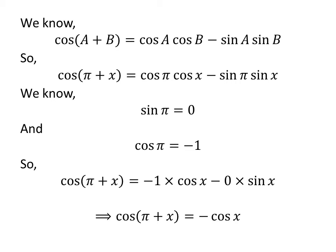So, cosine of pi plus x is equal to minus cosine of x minus 0, which is equal to minus cosine of x. So the value of cosine of pi plus x is equal to minus cosine of x.